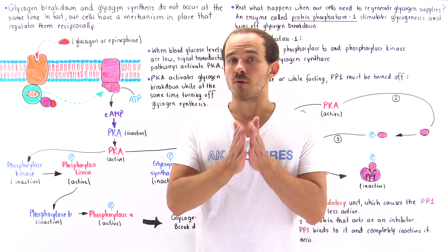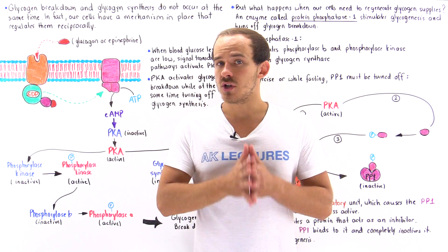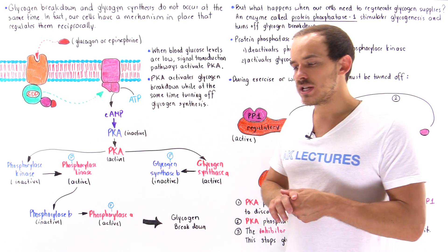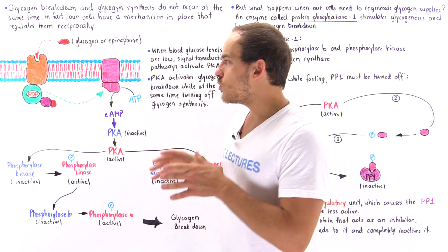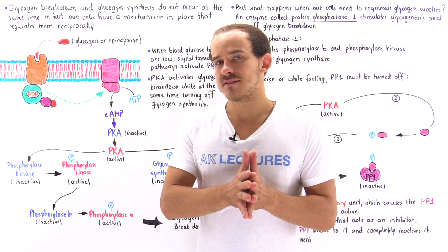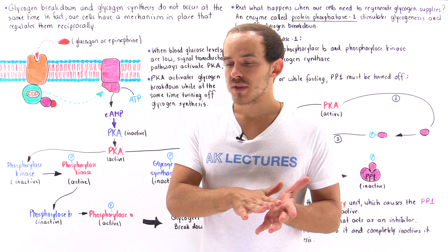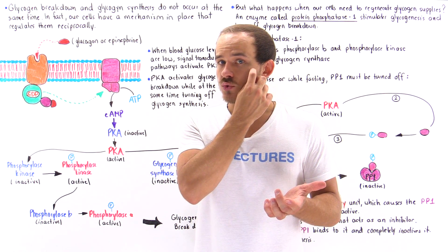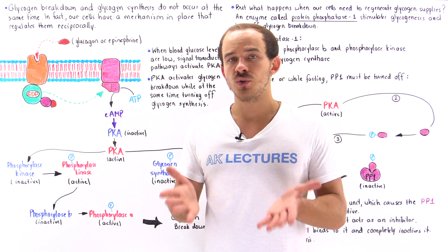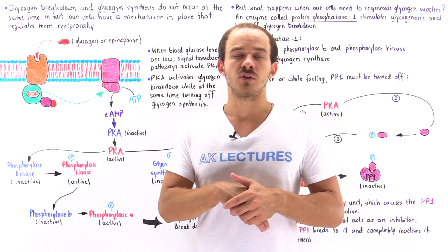If our body is exercising or fasting, the blood glucose levels will decrease. When blood glucose concentration decreases, liver cells will begin to break down glycogen to glucose and release that glucose into the blood, helping maintain a correct concentration of glucose in the blood.